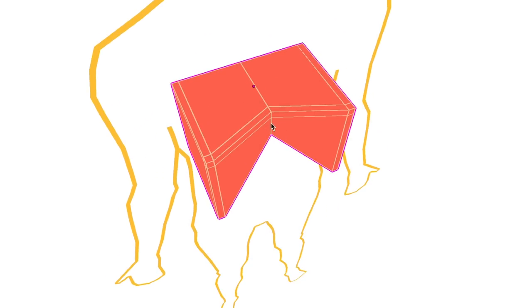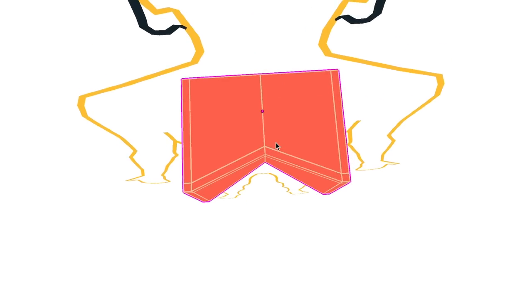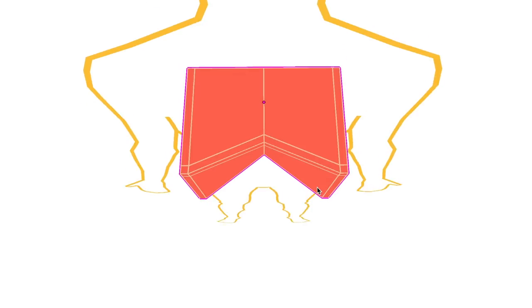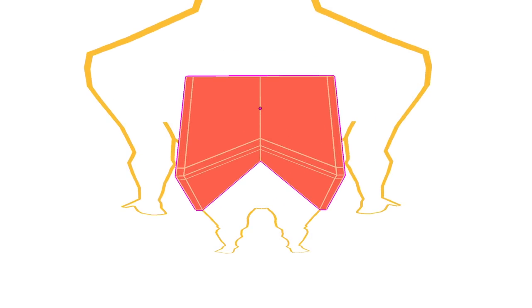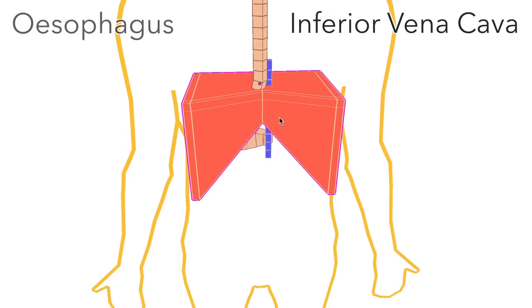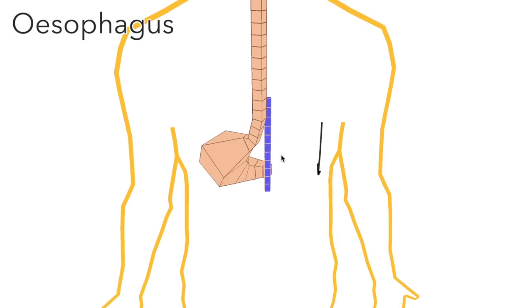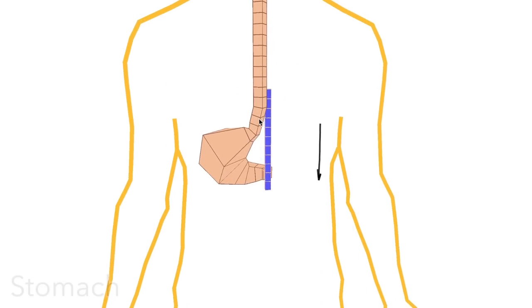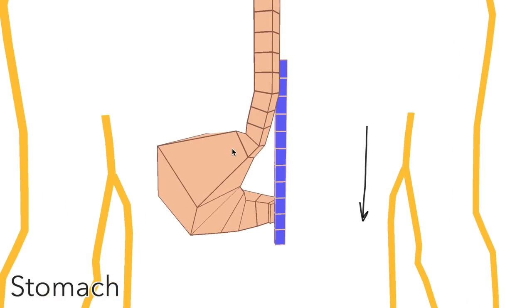This notch here in its posterior surface allows room for the vertebral column, and there are then two holes in the superior surface of the diaphragm, one for the inferior vena cava and one for the esophagus, which plugs into the stomach here.